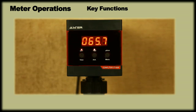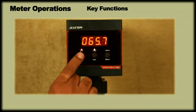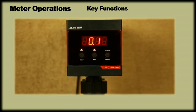As you can see, it has three programming keys: View key, acknowledge key and menu key. The view key displays factory settings like cell constant, calibration factor, output on and output off values and address.